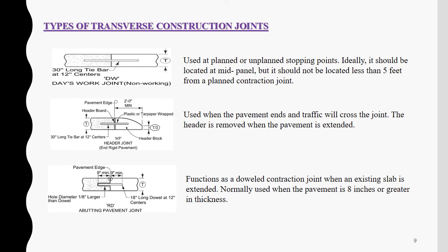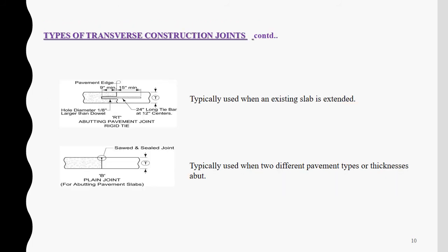Second, the header joint, used for the end of rigid pavement where traffic will cross the joint. The header is removed when the pavement is extended. Third, the abutting pavement joint, which functions as a doubled contraction joint when an existing slab is extended, normally used when the pavement is 8 inches or greater in thickness. Fourth, the abutting pavement joint with rigid type, typically used when an existing slab is extended. Fifth, the plain joint for abutting pavement slabs, just like a butt joint, typically used when two different pavements of different thicknesses are extended.